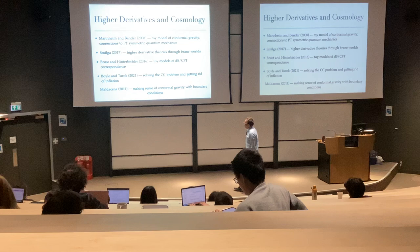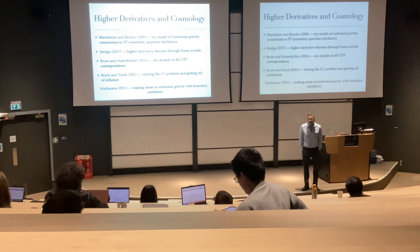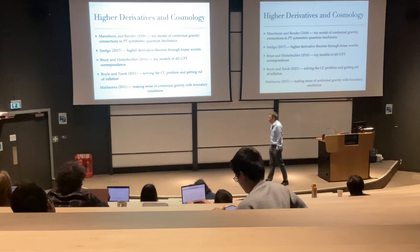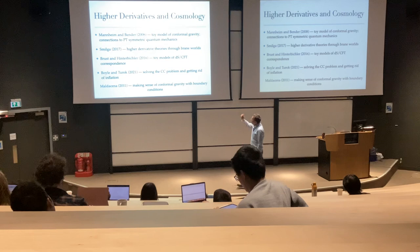We got together with Carl Bender and started thinking about simpler examples of theories with higher time derivatives — for example, this box-squared phi theory that has been a big character in today's talk. They argue that because of PT-symmetric quantum mechanics, you can really make sense of these things, and so you should go back and take conformal gravity more seriously.